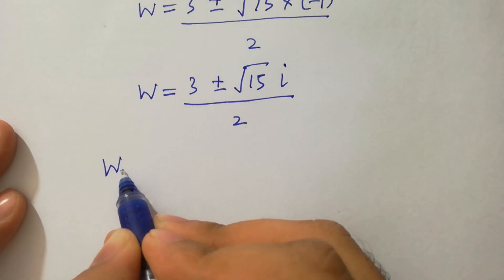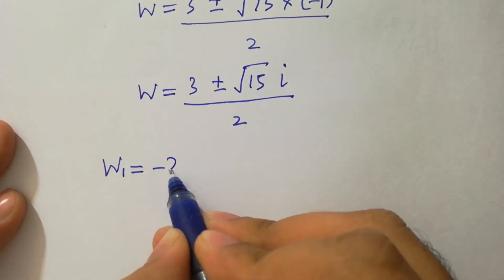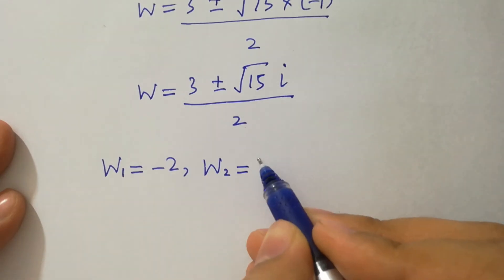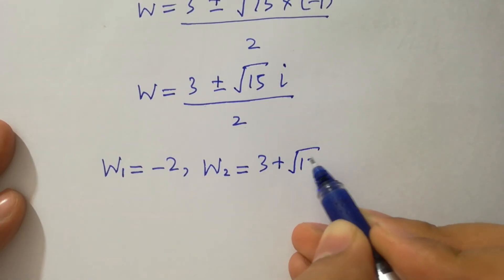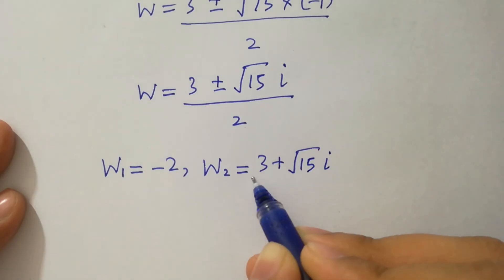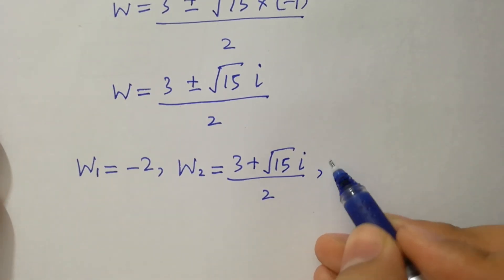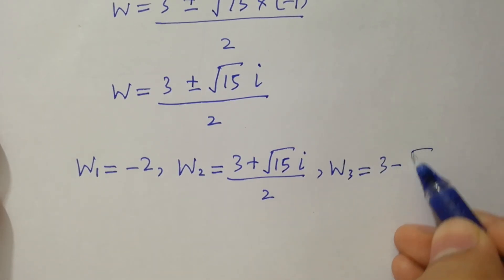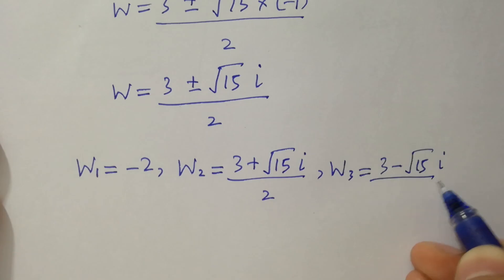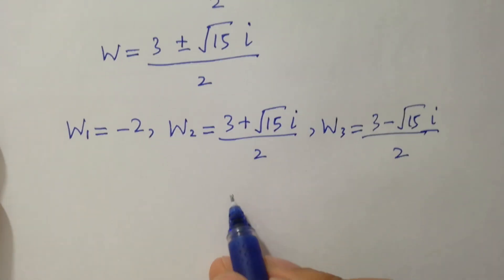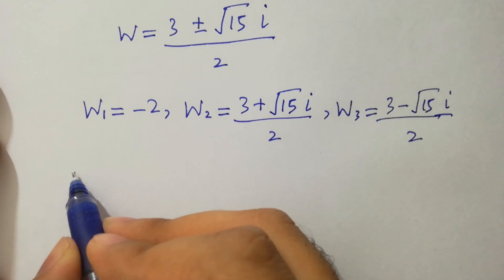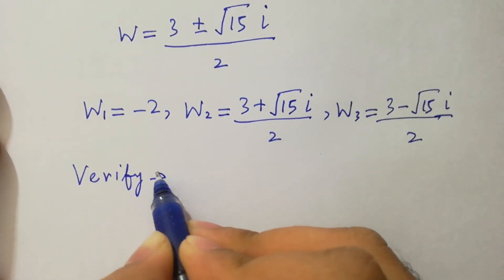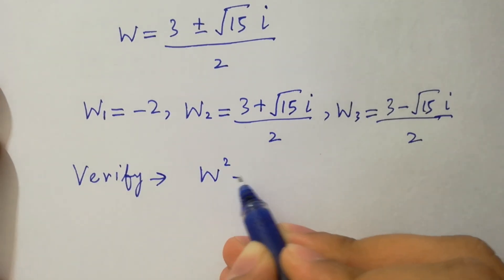So w₂ equals 3 plus square root of 15i over 2, and w₃ equals 3 minus square root of 15i over 2. Finally, we have three solutions in total.